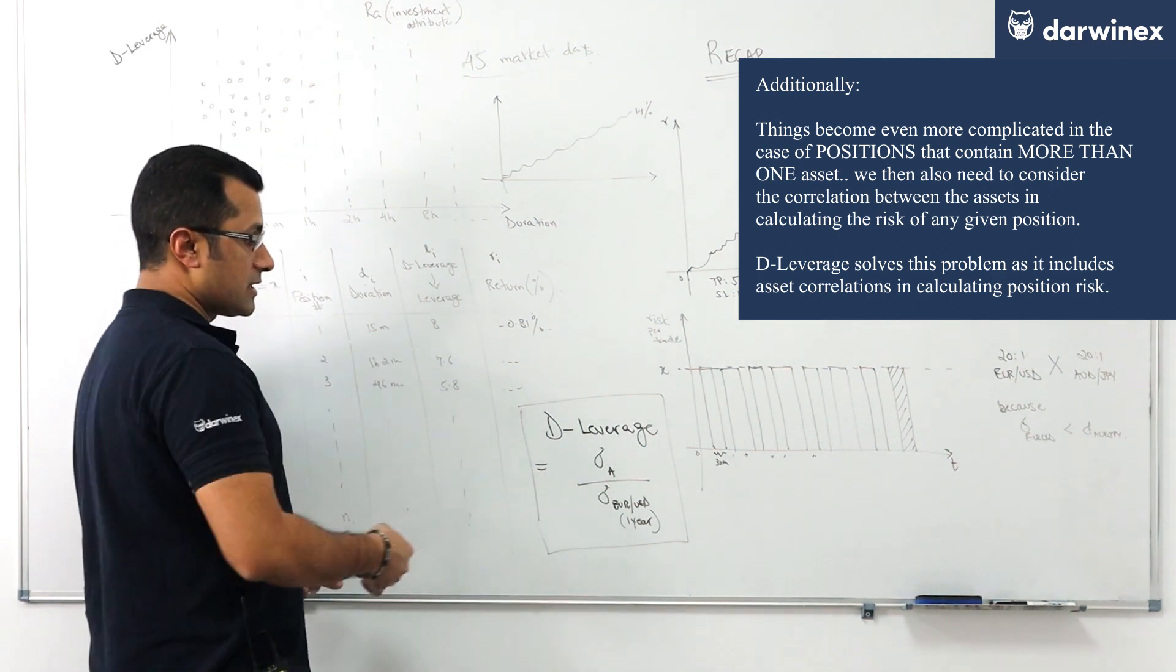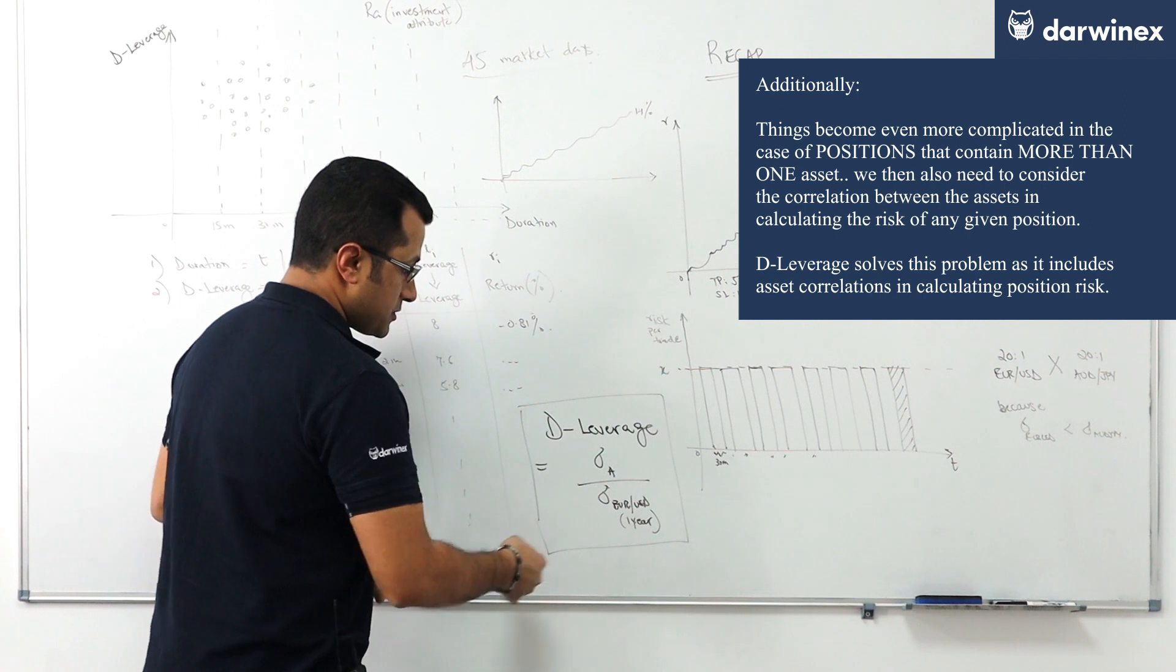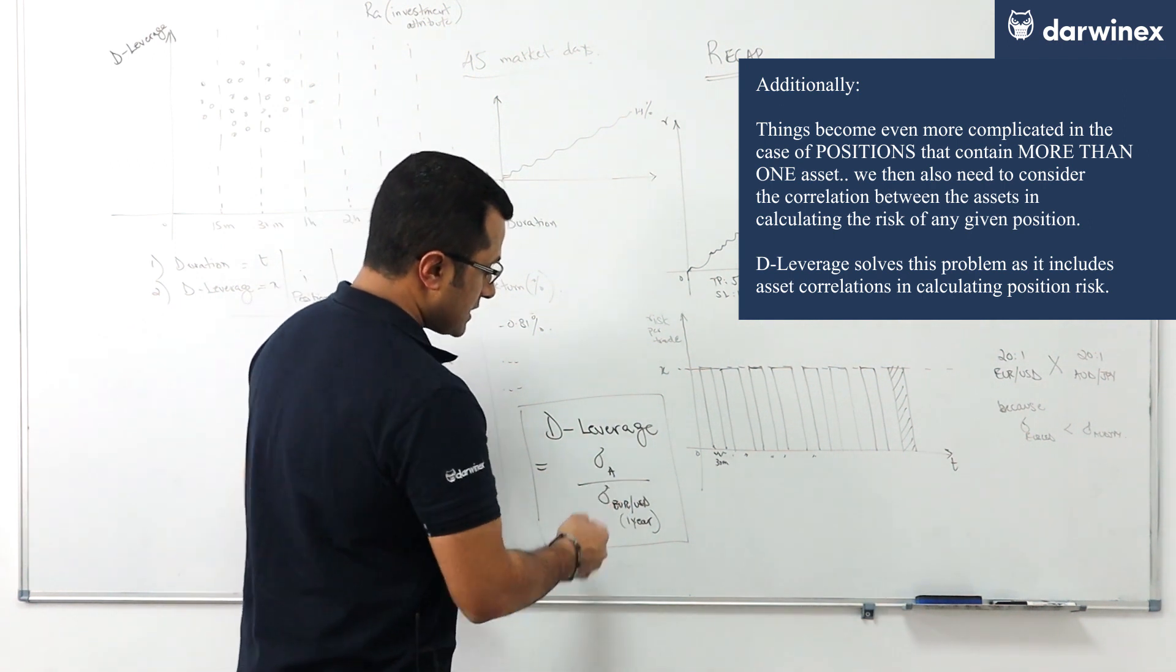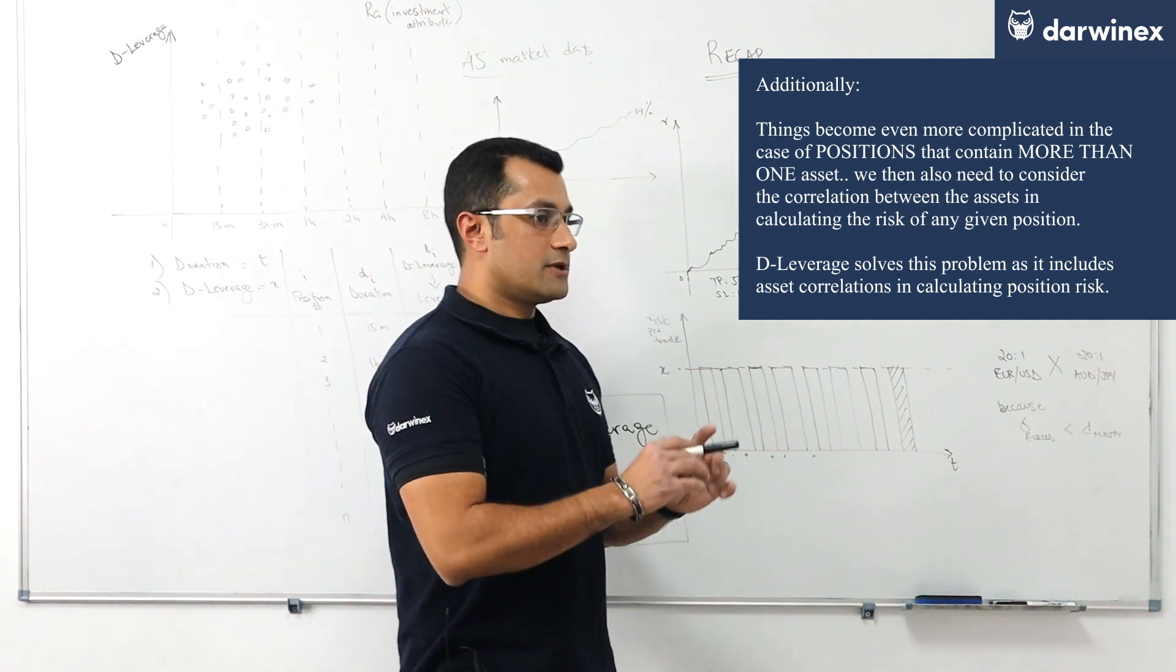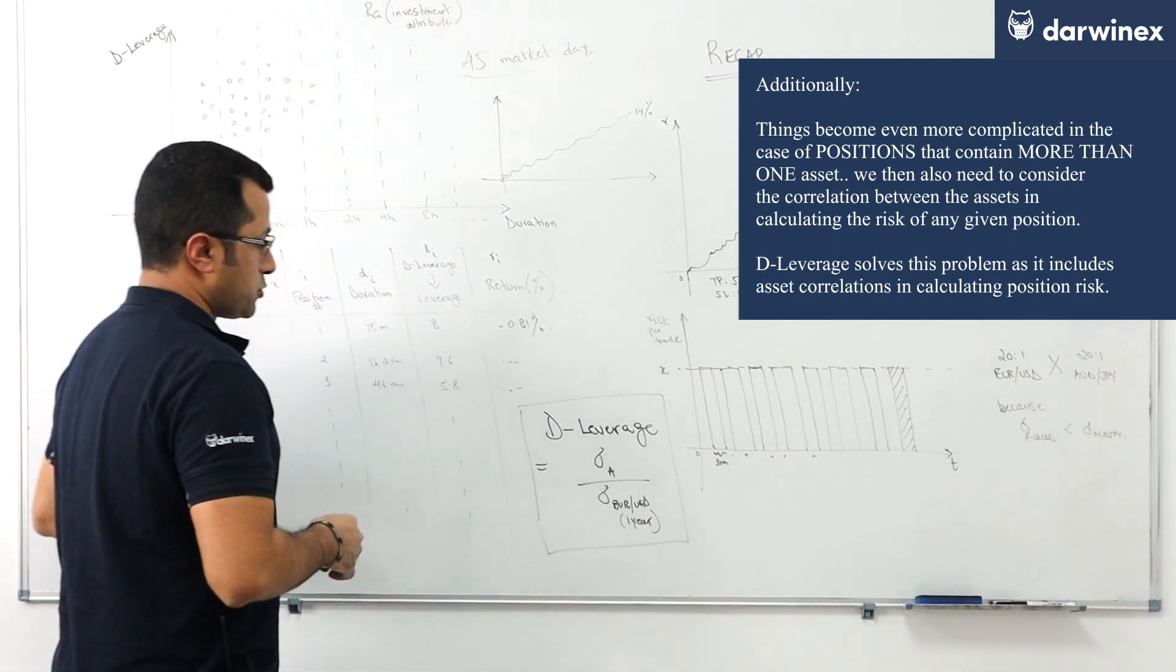The formula we defined as deleverage equals the volatility of the asset or the position normalized by the volatility of the euro dollar using a reference period of one year from the position's entry point.